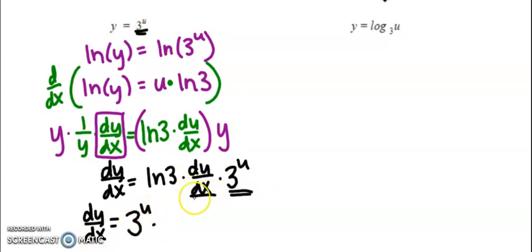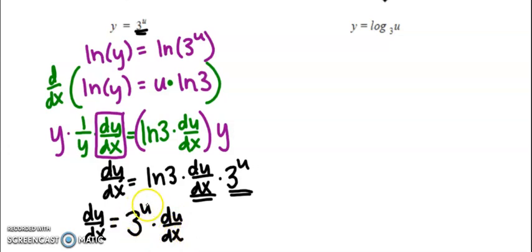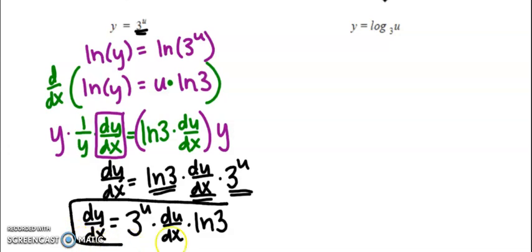Taking the derivative of u is something we're used to. When the base was e to the u, it was e to the u times the derivative of u. Now it's 3 to the u times the derivative of u, and then we still have this natural log of 3 that we're adjusting by. So the final answer has three different things multiplied together.